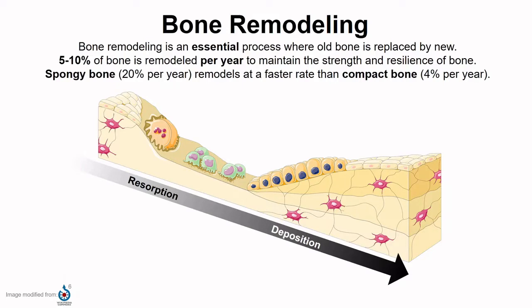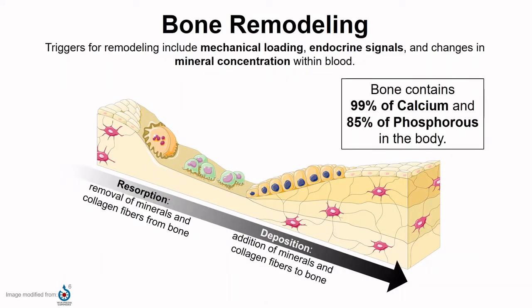Remodeling happens at different rates, and it happens a lot faster in spongy bone versus compact. The process of remodeling starts with resorption, in which osteoclasts remove and break down bone matrix and release minerals into the blood. As a majority of some of our minerals are stored in bone — like 99% of calcium — bone is the source of these minerals if they're needed elsewhere, and resorption is the way to free them.